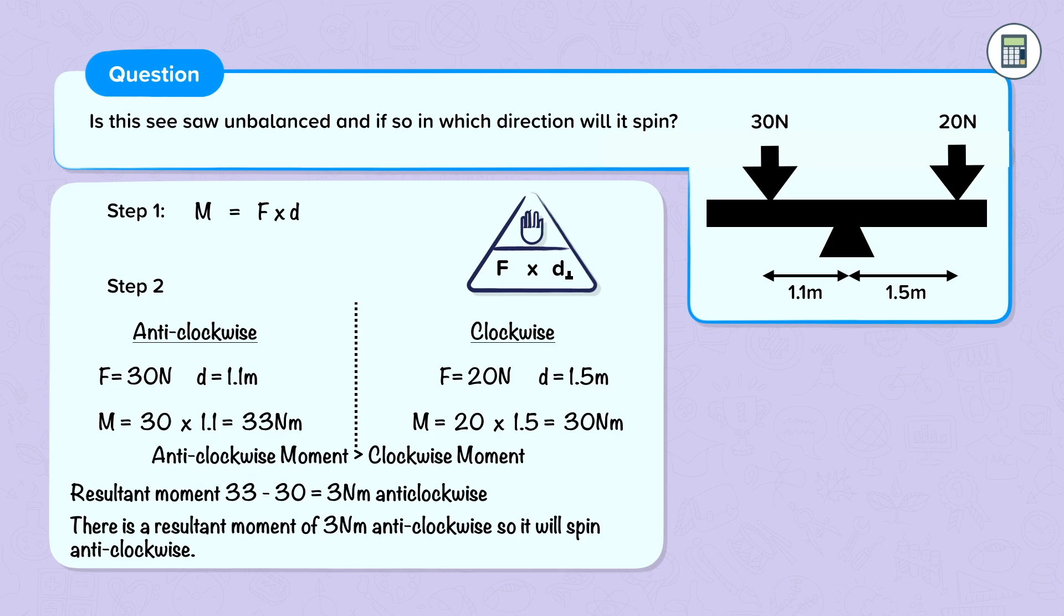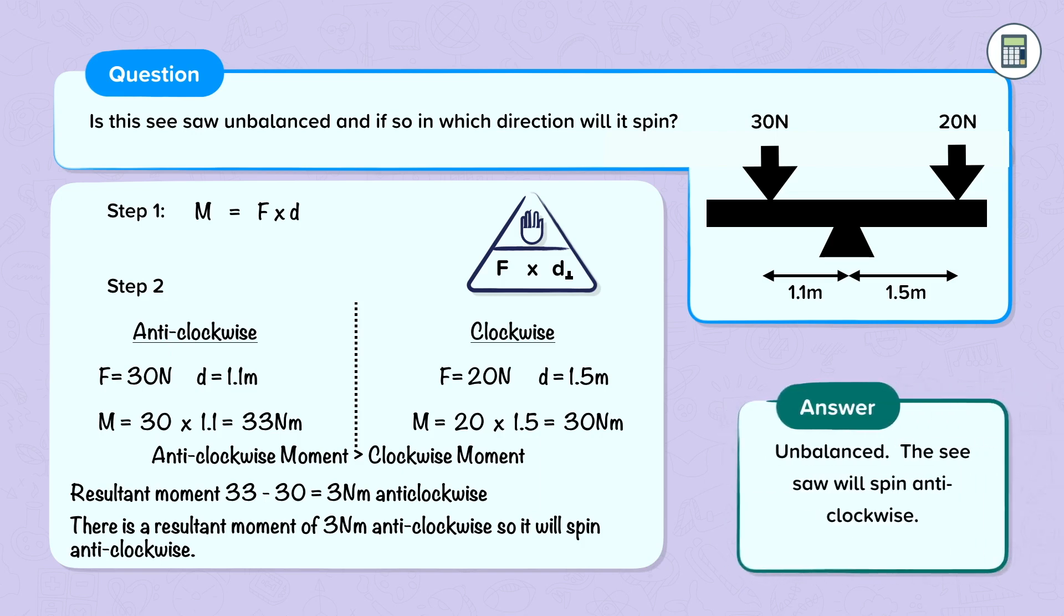So here the anti-clockwise moment is greater than the clockwise moment. 33 is greater than 30. The resultant moment is 33 minus 30, which is 3 newton meters anti-clockwise. So there's a resultant and overall moment, an overall turning force, of 3 newton meters anti-clockwise. So our seesaw will spin anti-clockwise. Our seesaw is unbalanced, and it will spin anti-clockwise.